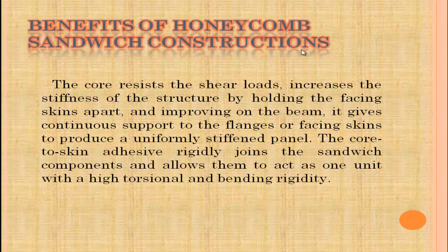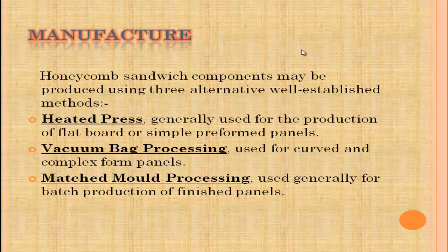The core-to-skin adhesive rigidly joins the sandwich components and allows them to act as one unit with high torsional and bending rigidity. Honeycomb sandwich components may be produced using three alternative well-established methods: heated press, vacuum bag processing, and match mold processing. In this project, we mainly used the heated press method.